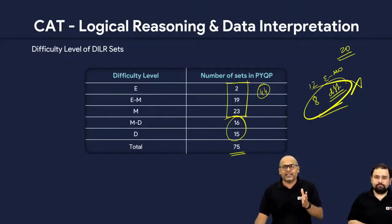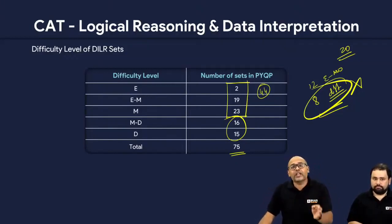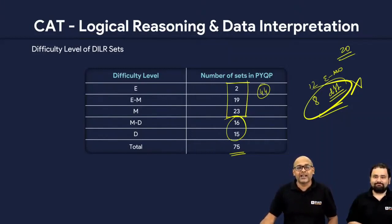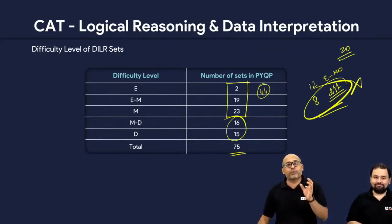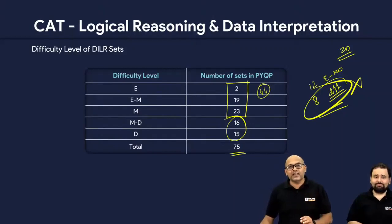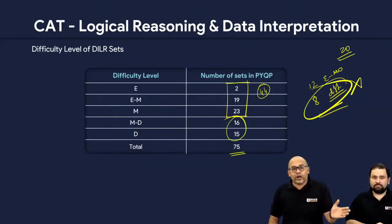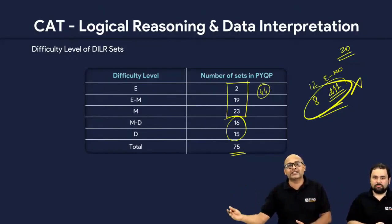Last year — or the year before — despite so much experience, I spent 15 to 18 minutes and got zero questions done. I had picked two horrible sets. But then I knew in the last 20-22 minutes I had to find two easy sets. I searched for them, found them thankfully, and got a decent percentile. So please keep this in mind: picking the wrong set is not the end. Get out of it and make sure you solve the easy sets.